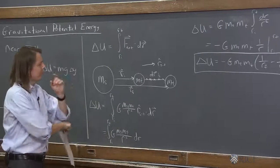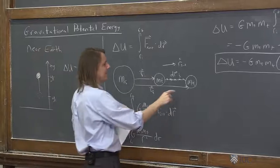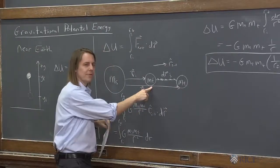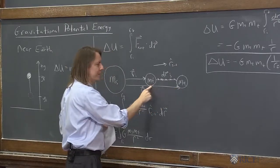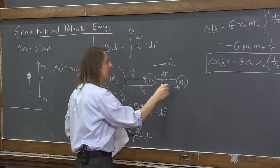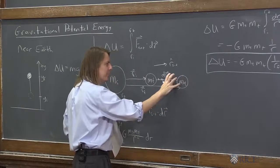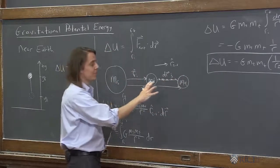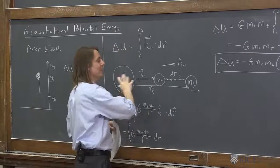You could also do this whole calculation by making this ri and this rf. If this was initial and this was final, what would happen? We're still doing external work. It wants to go this way by itself, so with external force, it's still pushing that way because it's having to keep it from crashing in - it's having to balance the force.